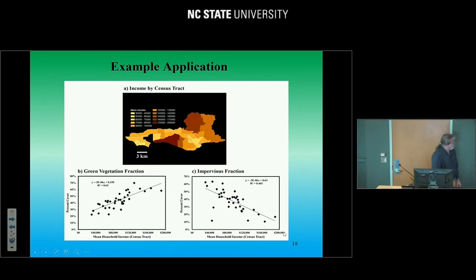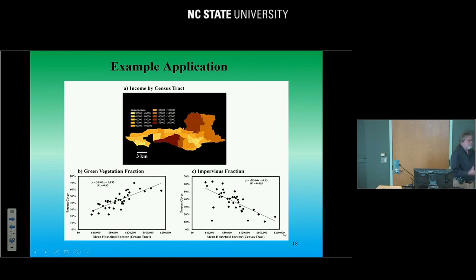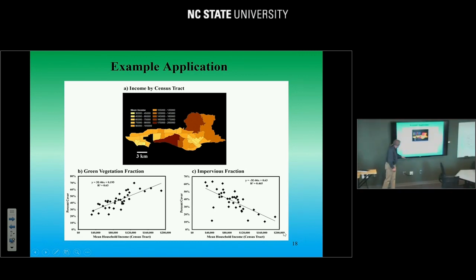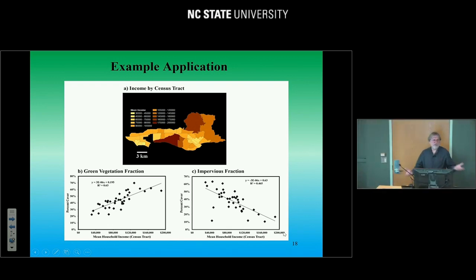We were always interested in whether we could do anything useful with this. Here's one product: we looked at housing values through census tracts and the relationship between fractional cover, impervious surface, and census value. You see the relationship you might expect in Santa Barbara: houses that are worth a lot have a lot of trees, and houses not worth so much don't have a lot of trees. There's a strong correlation between the value of your house and whether you have a tree or not — and that translates to all kinds of amenities associated with having trees.